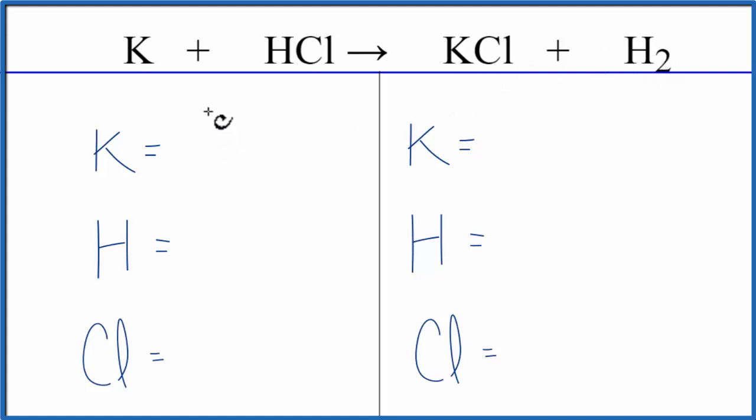Let's count the atoms up on both sides of the equation. We have one potassium, one hydrogen, one chlorine.